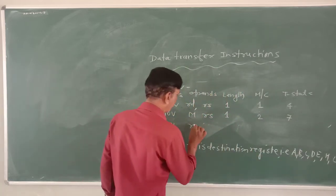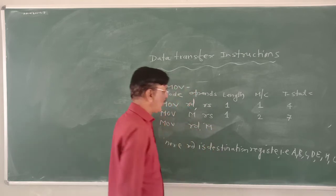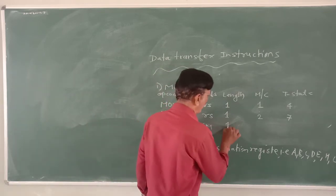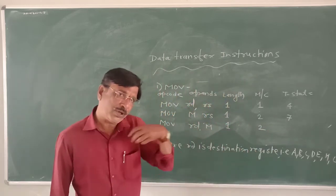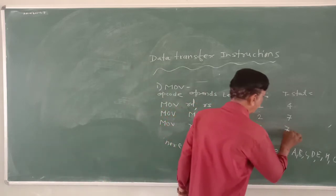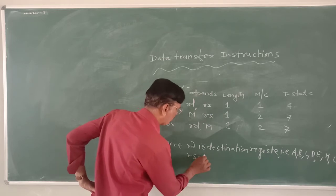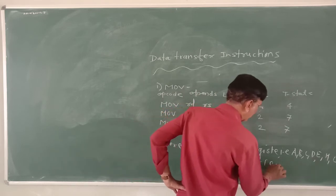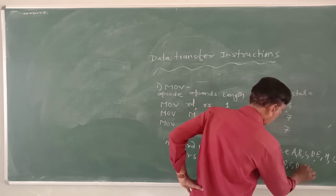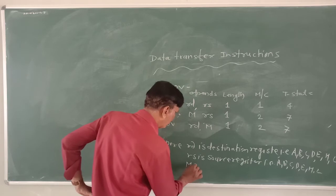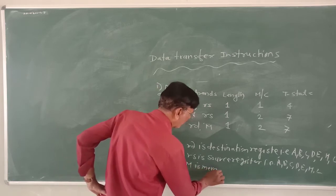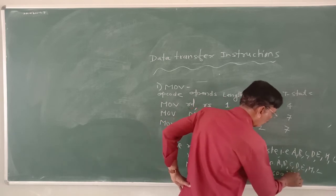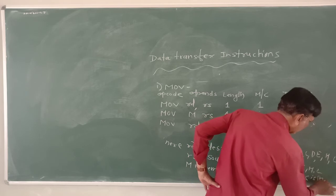The third format is MOV RD, M — moving the contents of a memory location to a register. M is the memory location whose address is stored in the HL pair. The microprocessor goes to the HL pair, gets the address, and transfers the content of that memory location to the destination register. The number of machine cycles is 2 — opcode fetch plus memory read — and the T-states are 7.